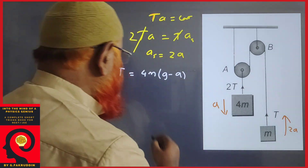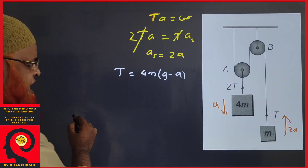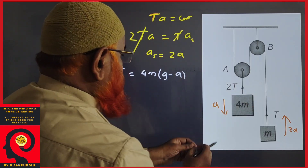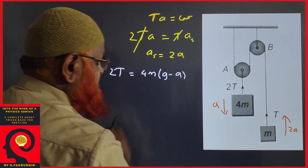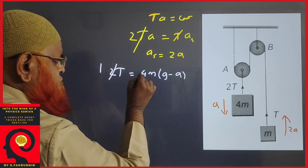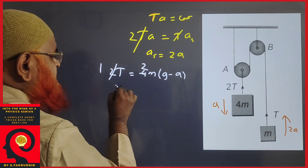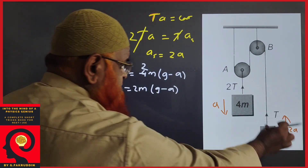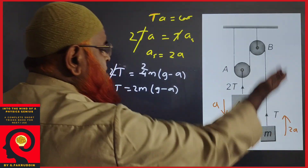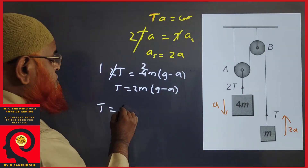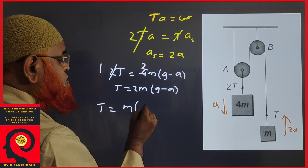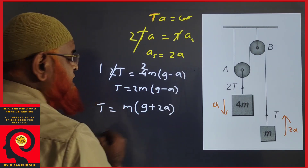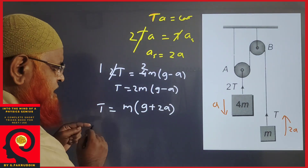This larger block has tension 2T and mass 4m. As it is going down, tension becomes 2m(g − a). Now for this block — if it is moving upwards — tension is equal to m(g + 2a), because it has acceleration 2a.